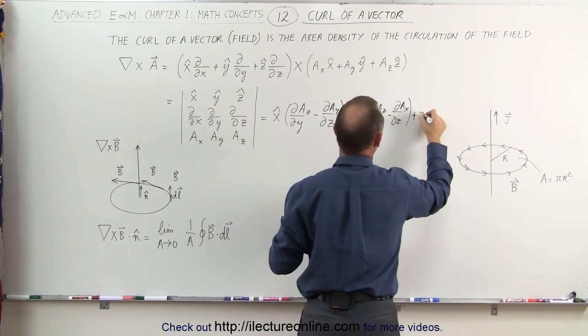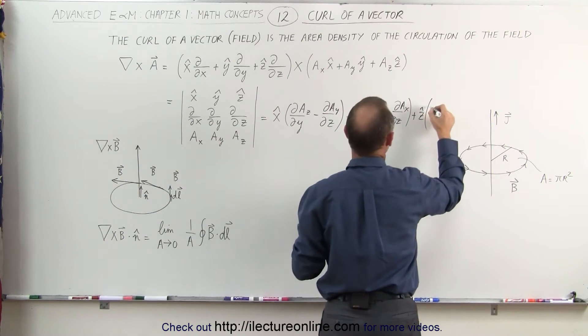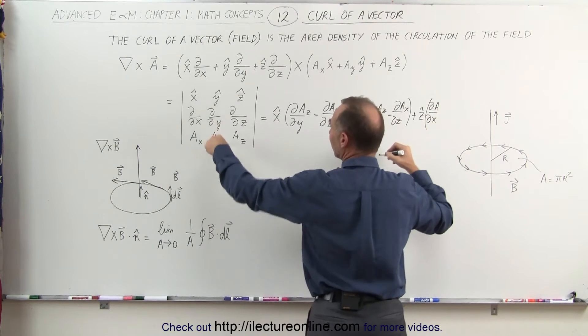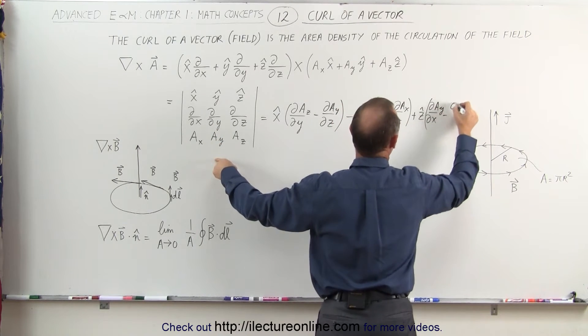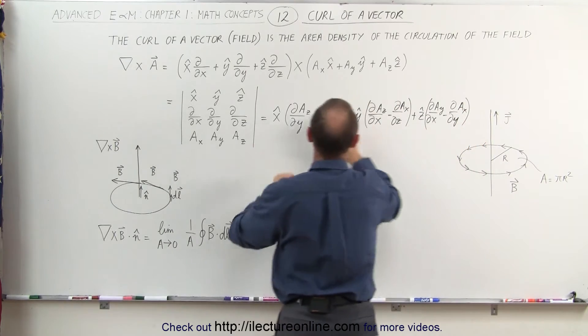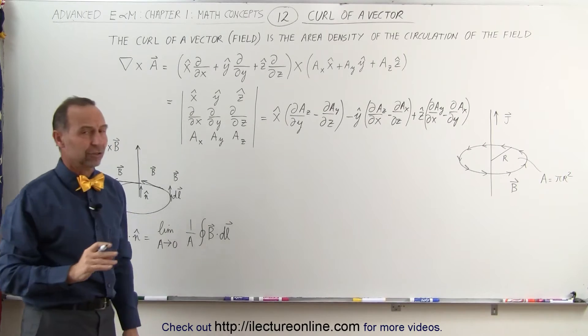And finally, plus, now we have the Z unit vector. We multiply that times this product here, the partial with respect to X of A_Y minus the partial with respect to Y of A_X. So that's how we write out the curl of that vector.